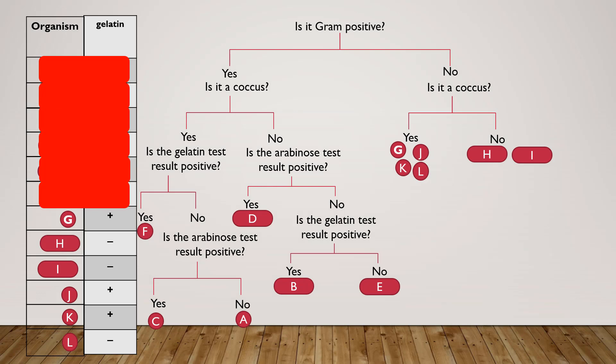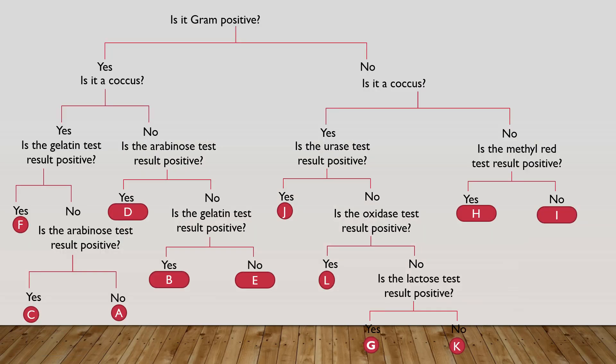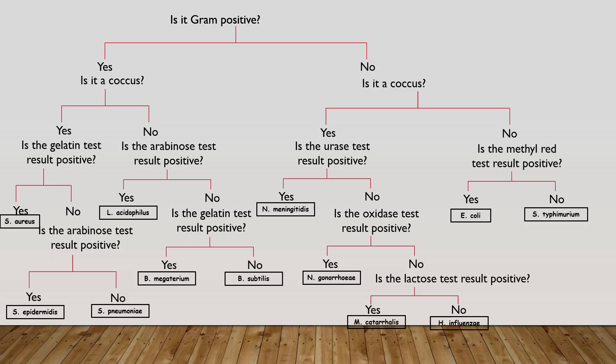So we're left with organisms G through L. Ultimately, if you continue step by step like I've showed you, you'll have 12 individual bacteria in their own groups. Now, up until now, I've referred to the bacteria by letters A through L, but I'm going to give them real bacterial names now, because now we're going to use this key to help us solve an unknown bacteria.